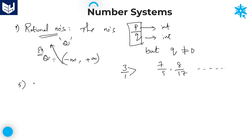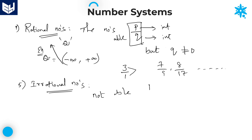Coming to irrational numbers — it is just the opposite statement of rational numbers. Rational numbers are the numbers which are able to be written in the form of P by Q, whereas irrational numbers are the numbers which are not able to be written in the form of P by Q. Irrational numbers are basically denoted by Q dash or Q bar.